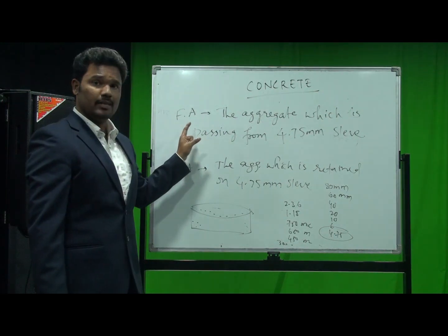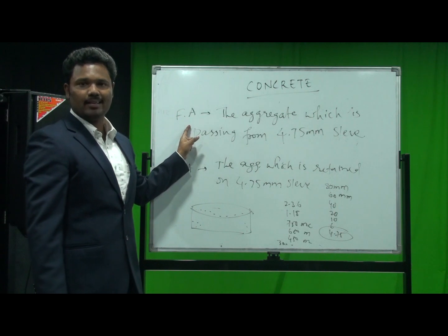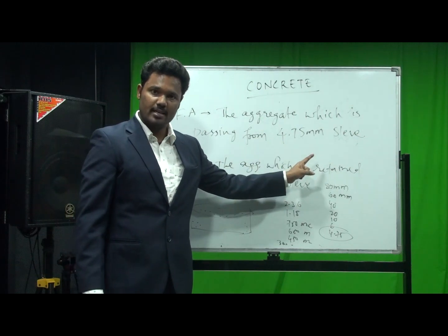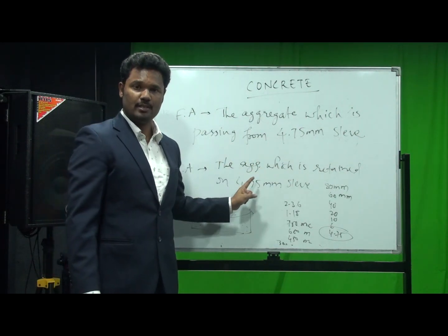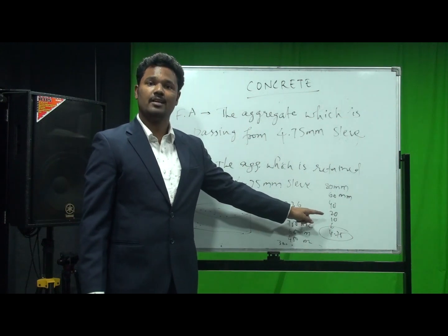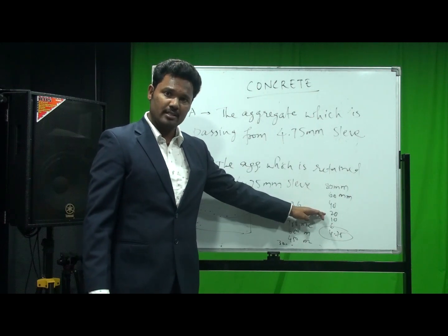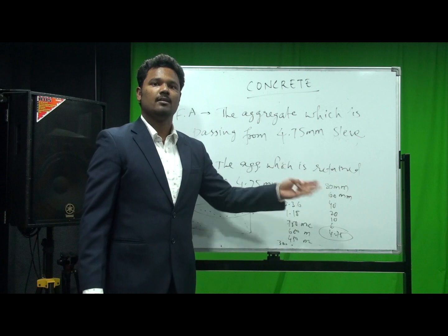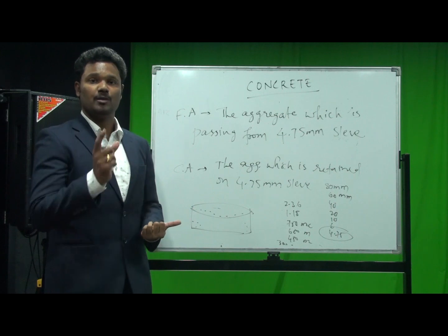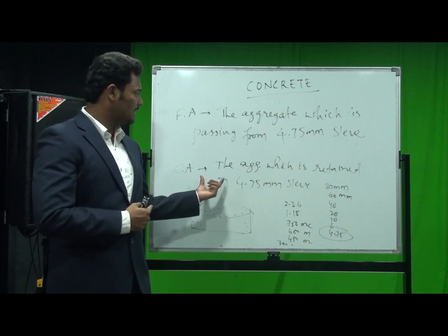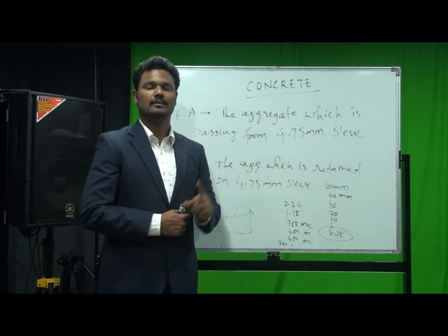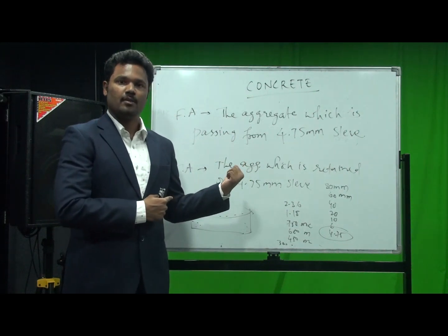I hope the definition is clear. The aggregate which passes through the 4.75 mm sieve is called fine aggregate, and the aggregate retained on it is coarse aggregate. There are different sizes of sieves, and among these we consider 4.75 mm. Aggregates consist of 70 to 80 percent of the weight of concrete, and there are two types of aggregates. Thank you.